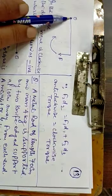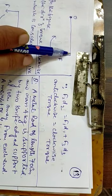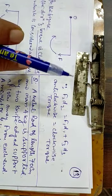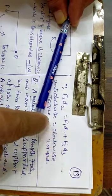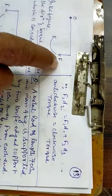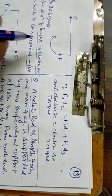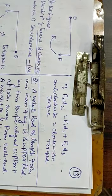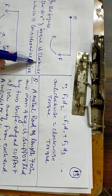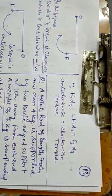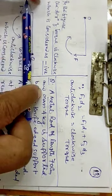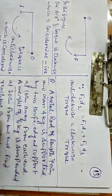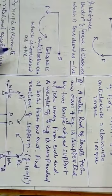Like a body fixed at a point and a force acts on it — if the force is in this direction, the body will rotate. The torque is clockwise, and clockwise is negative because anti-clockwise is positive. If the force acts in the other direction, the torque is anti-clockwise, and that is positive.